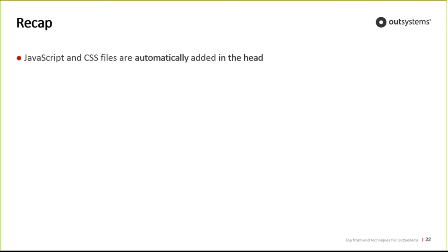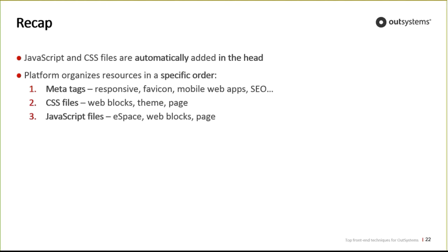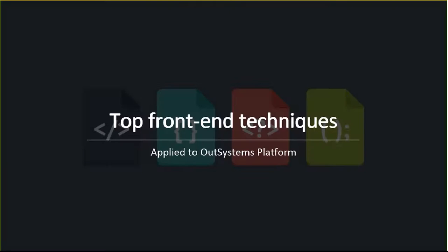Quick recap: JavaScript and CSS files are automatically added in the head by the platform in a specific order. First come all meta tags for responsiveness, favicon, and mobile web app support — and developers can add their own meta tags too. Then all CSS files: from web blocks, the theme, and the page. Finally all JavaScript files: the eSpace, web blocks, and the page. All our code is inside a form to avoid losing user information when sending it to the server.